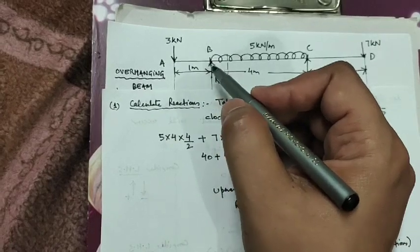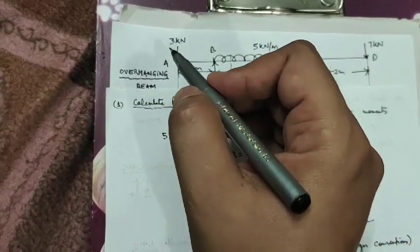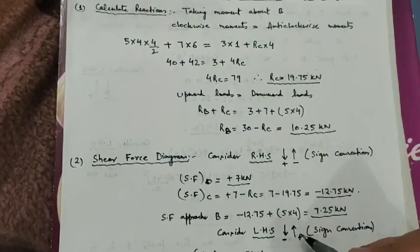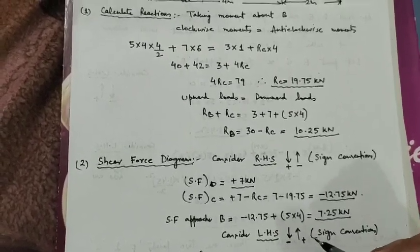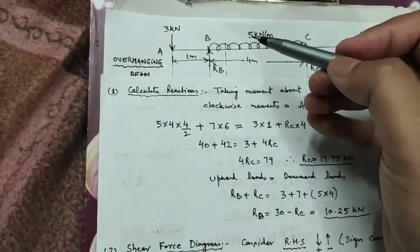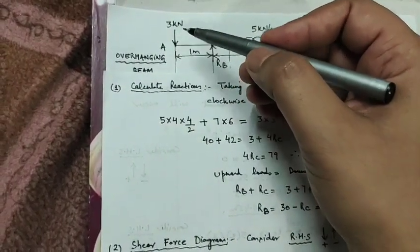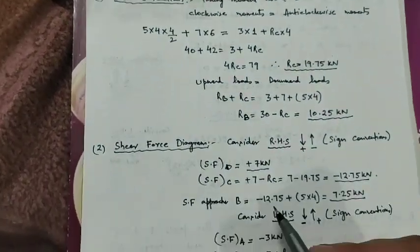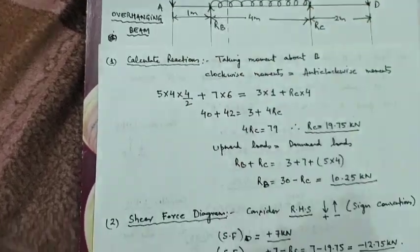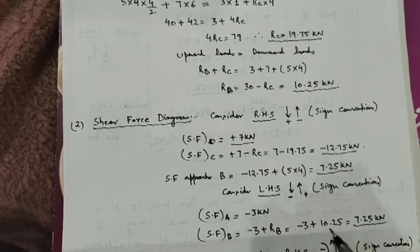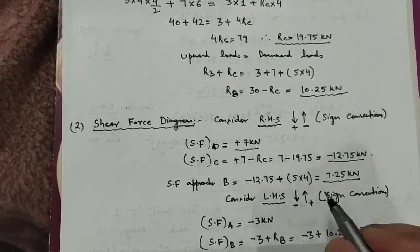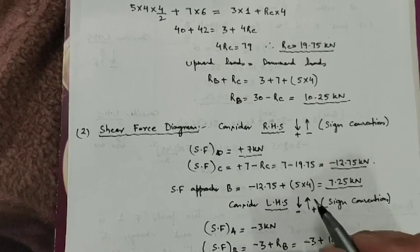We can also find the shear force at point B by considering the left-hand side of the beam. On the left-hand side, all downward forces are negative and all upward forces are positive. Starting from point A, there is only one force of 3 kN downward, which is minus 3 kN. The shear force at point B will then be minus 3 plus RB, giving minus 3 plus 10.25, which equals 7.25 kN — confirming the earlier result.